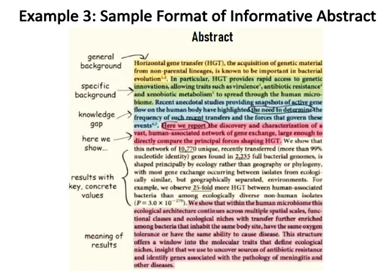Example three: sample format of an informative abstract in which key parts are general background, specific background, and knowledge gap. It also includes a section beginning with 'here we show,' presenting results with key concrete values and the meaning of those results.